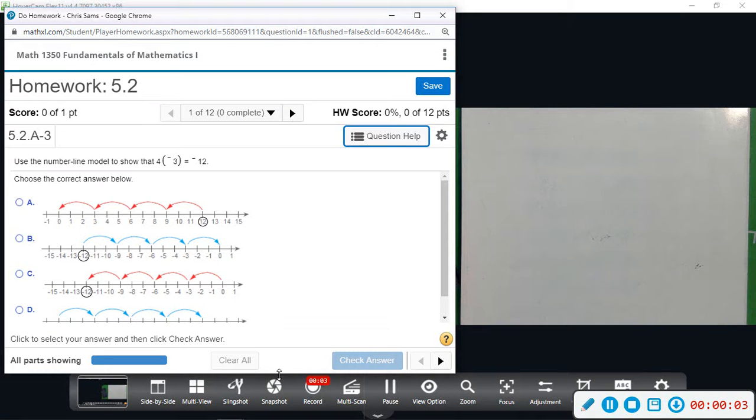All right, section 5.2, we're doing multiplication and division of integers. So problem number one wants us to use the number line model to show four times negative three is negative twelve.